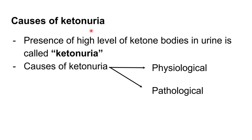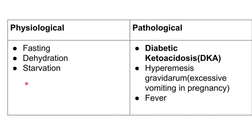The causes of ketonuria can be divided into physiological and pathological. Physiologically, fasting is normal — when fasting, carbohydrate source is unavailable so fat is utilized. Severe dehydration and starvation are also physiological causes. Pathologically, diabetic ketoacidosis is very common in diabetic patients and is an emergency. Hyperemesis gravidarum — severe vomiting in early pregnancy — can also cause ketonuria.